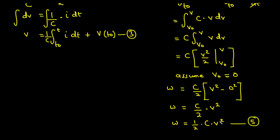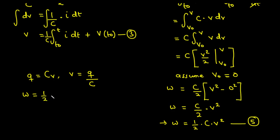Also, since charge Q = C·V, we have V = Q/C. Substituting into equation five, v² becomes Q²/C², so w = ½·C·(Q²/C²). One factor of C cancels, giving us w = Q²/(2C). We call this equation six — an alternative formula for the energy stored in a capacitor.